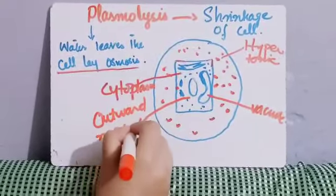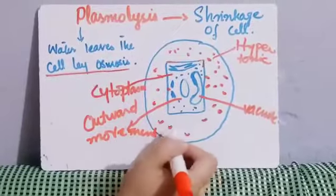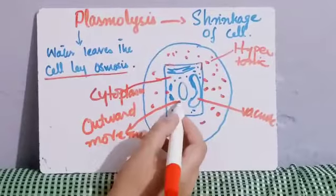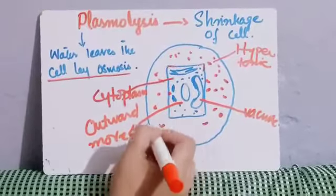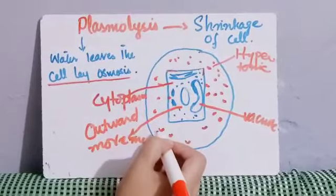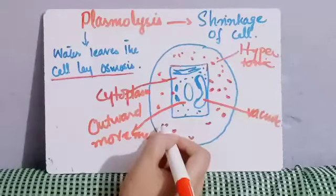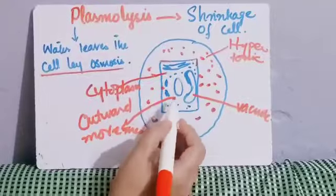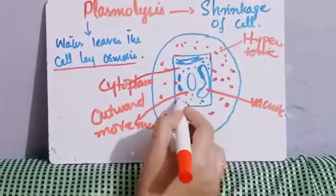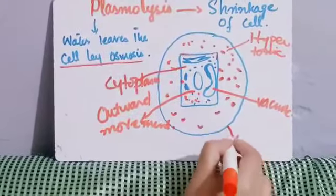Water is moving from the hypotonic solution towards the hypertonic solution. As a result of this outward movement of water, the cytoplasm becomes shrink.